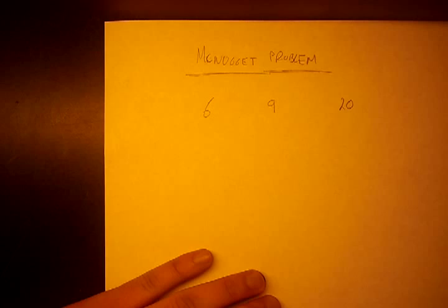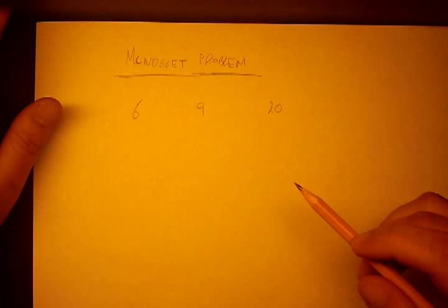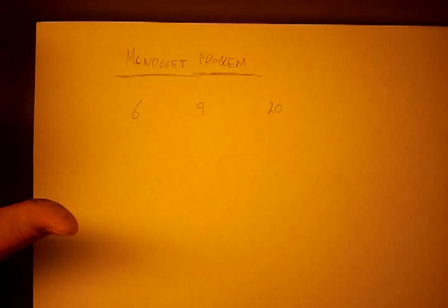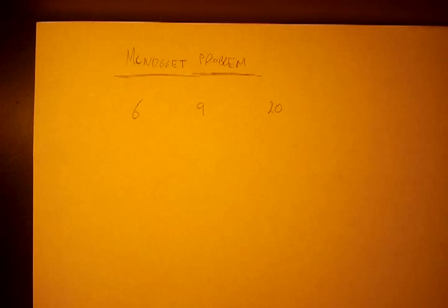They come in packs of six, nine, and twenty. That was at a time when they only came in these three types of boxes. We want to find the Frobenius number with these three numbers. There's no explicit formula for this that's been found, but we can use algorithms — specifically the same kind of strategy we've been using.